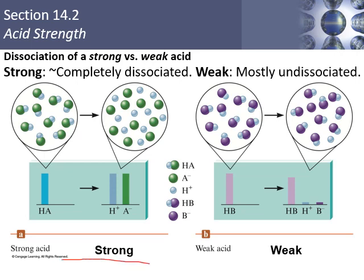For a strong acid, we start with a concentration of HA and after it dissociates, the concentration of H+ is essentially the same as the original acid concentration — so we just assume they're equal. The seven strong acids to memorize are: hydrochloric (HCl), hydrobromic, hydroiodic, nitric acid (HNO3), sulfuric acid (H2SO4), chloric acid (HClO3), and perchloric acid (HClO4). If it isn't one of those seven, assume it's a weak acid. For weak acids, you're not producing nearly as much H+, so we have to do those problems differently.